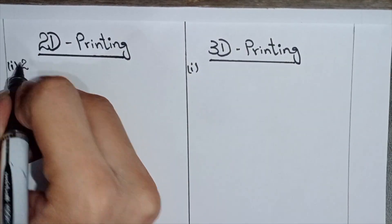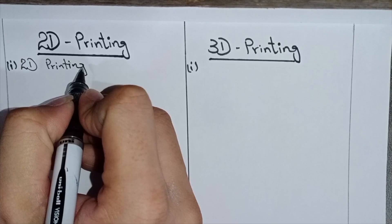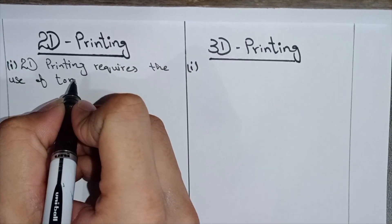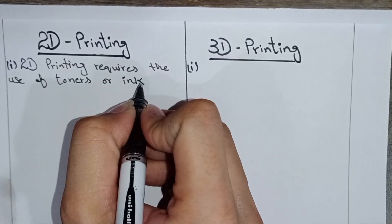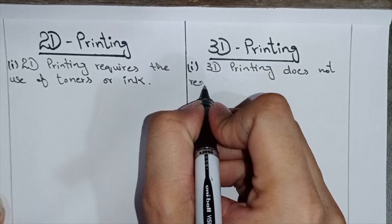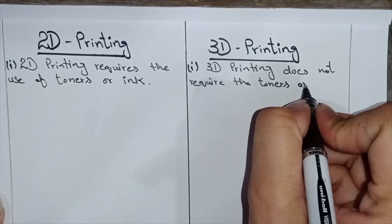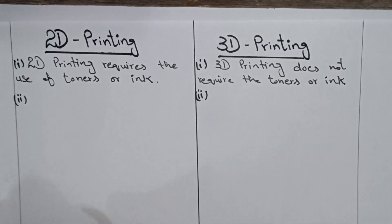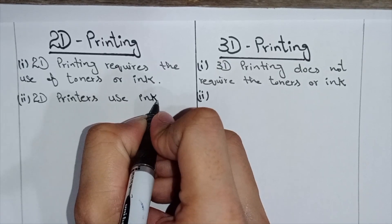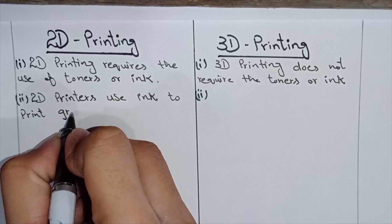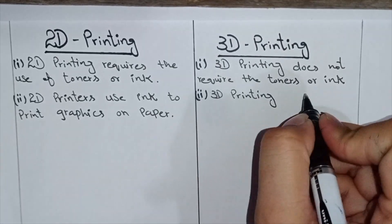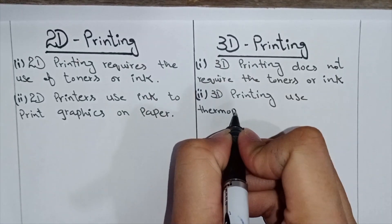Differentiating between 2D and 3D printing: 2D printing requires the use of toners or ink, whereas 3D printing does not require toners or ink. 2D printers use ink to print graphics on paper, while 3D printing uses thermoplastic.